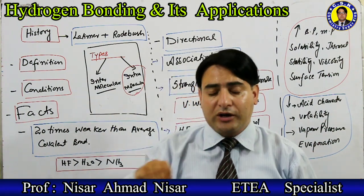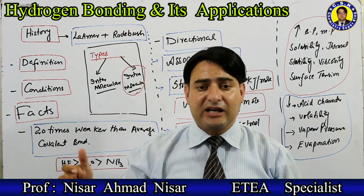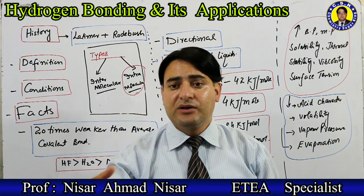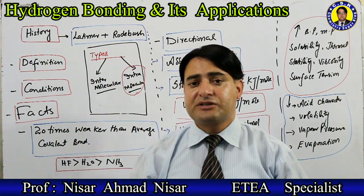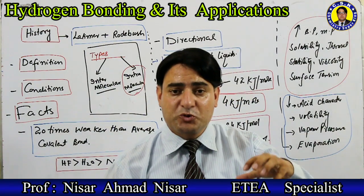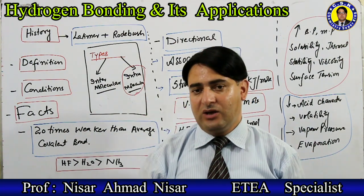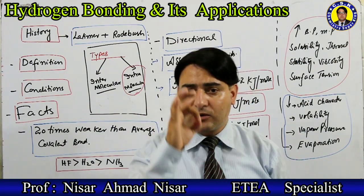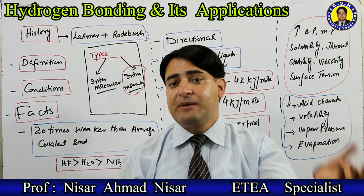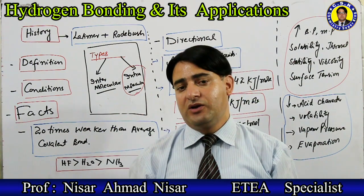There is a case where carbon can also be attached. When carbon is bonded to very highly electronegative atoms, it becomes more electronegative itself. For example, chloroform — carbon attached to multiple chlorines becomes electron-withdrawing enough. The highly electronegative atom required must have a lone pair of electrons and a small atomic size.